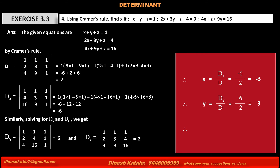Therefore, z equals Dz upon D equals 2 upon 2, which equals 1.